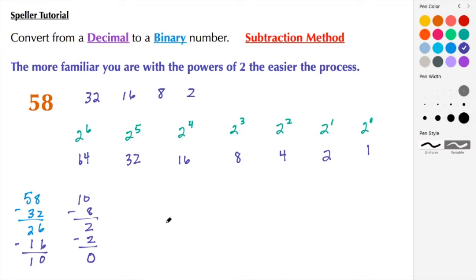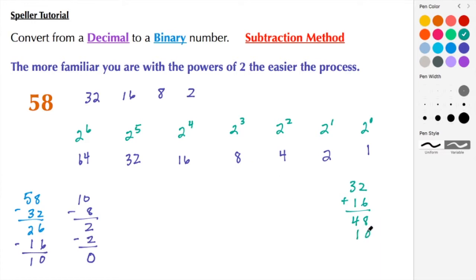Before we do the conversion, let's check to make sure these powers of two add up to 58. We have 32 plus 16, which is 48, plus 8 plus 2, which is 10. So 48 plus 10 is 58 — we know we picked the correct powers of two.